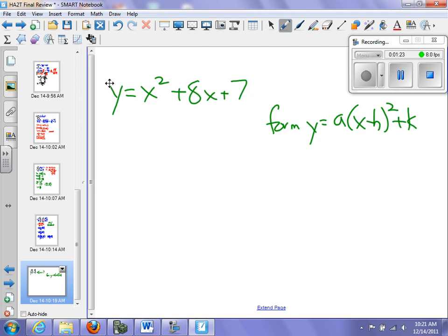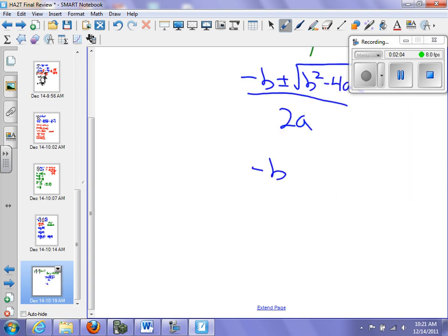If I have ax squared plus bx plus c, what's my vertex? Remember the vertex? Let's look at the quadratic formula: minus b plus or minus, right? So I could actually write this as negative b over 2a plus or minus the square root of b squared minus 4ac over 2a. I could do that.